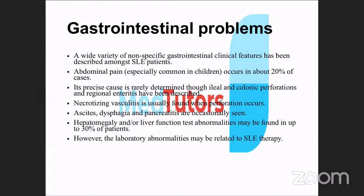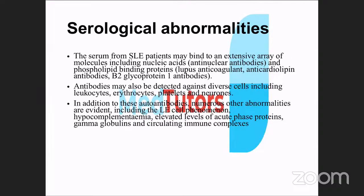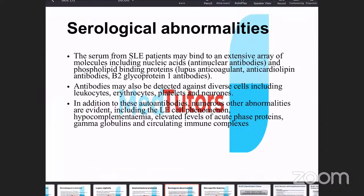The GI tract is also affected, though less commonly than the kidney. Patients can present with abdominal pain, ascites, dysphagia, and pancreatitis. Liver enlargement may also occur. SLE is associated with a range of antibodies including ANA, anti-double-stranded DNA, and anti-Smith antibodies.